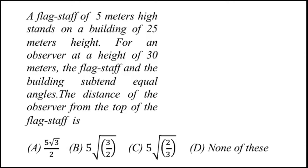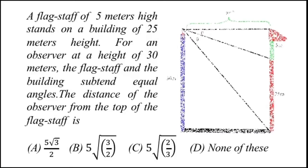The options are: (A) 5√3/2, (B) 5√(3/2), (C) 5√(2/3), (D) None of these. Let's see how the diagram of the problem will be constructed.